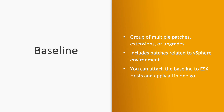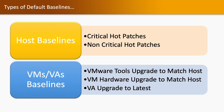A baseline is a group of multiple patches. For example, if you have to apply 10 patches to an ESXi host, you do not need to install those 10 patches individually. You simply create a baseline, combine all those patches into it, and perform the patching activity in one go. You can attach the baseline to an ESXi host and apply all patches at once.